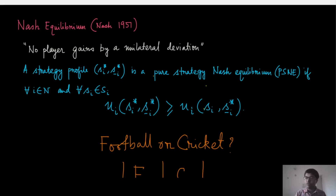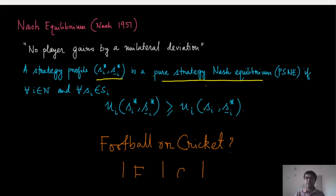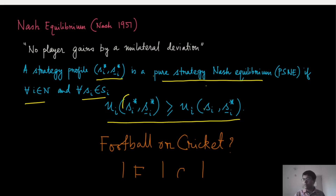Let us put it in formal terms. We consider a strategy profile S_i*, S_{-i}* — meaning S_1*, S_2*, up to S_n*. This is called a pure strategy Nash equilibrium, or PSNE for short. It holds if for all players i and all strategies S_i of player i, when the players are at that strategy profile and player i unilaterally deviates to S_i while others hold on to S_{-i}*, player i's payoff is never going to get better.